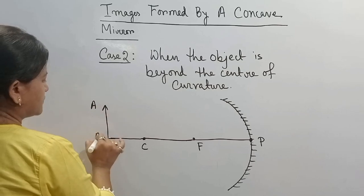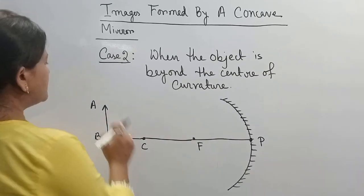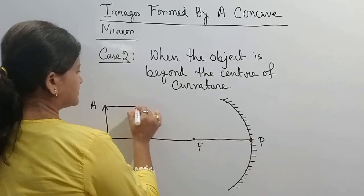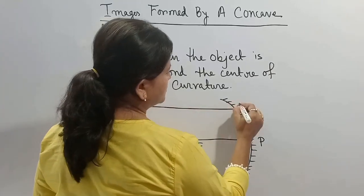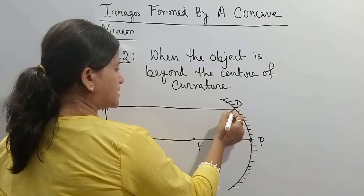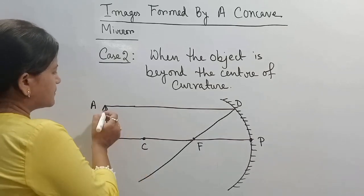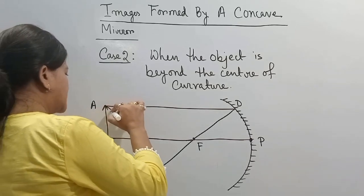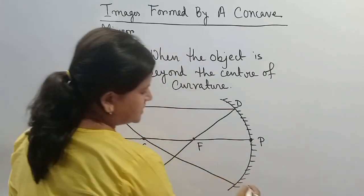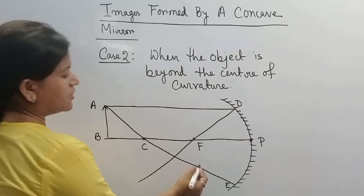The object is AB. A ray is coming from point A, which is parallel to the principal axis, and is incident on point D. From this point, it will get reflected and pass through the focus. Another ray is coming from point A, passing through the center of curvature, and is incident on point E. From this point, it will get reflected along the same path.